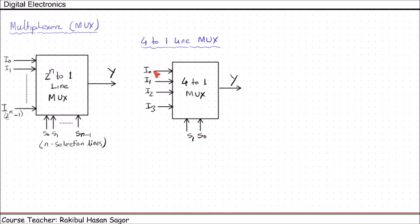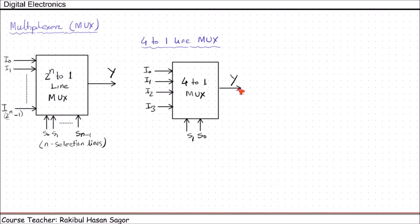If the selection input is set to 00, then the I0 input data will be transferred to the output Y line. We may have any data available on the input side, for example 1011, but not all the data will be passed through the Y line — that depends on the selection input. If the selection input is 10, then whatever data is available in I2, that will be transferred to Y. And if the selection input is 11, then whatever data is available in I3 will be available at the output Y.